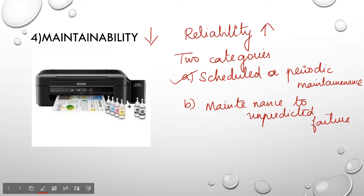Now let us take the second category. In the same inkjet printer, the front feeding part has a failure. This is an unexpected failure, so this is called maintenance due to unpredicted failure. In both cases, you bring your system offline and then fix it, and during this time your system will not be available.